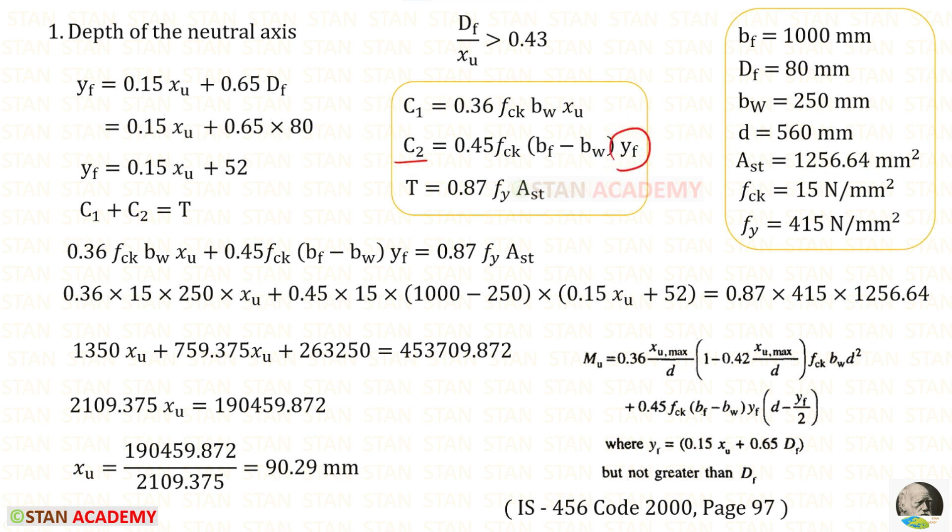The formula for Yf is given in page number 97. Yf should not be greater than Df. Df is 80. In this formula, we can apply C1, C2 and T. In this way, for xu we will get 90.29 mm.